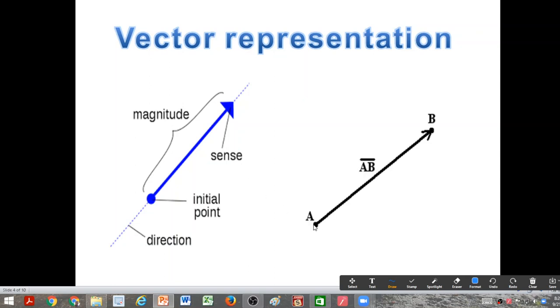The direction is indicated by an arrow. So here the vector is from A to B. The length AB represents the magnitude of the vector, and the arrow is pointing in this direction, which means it's the direction of the vector.